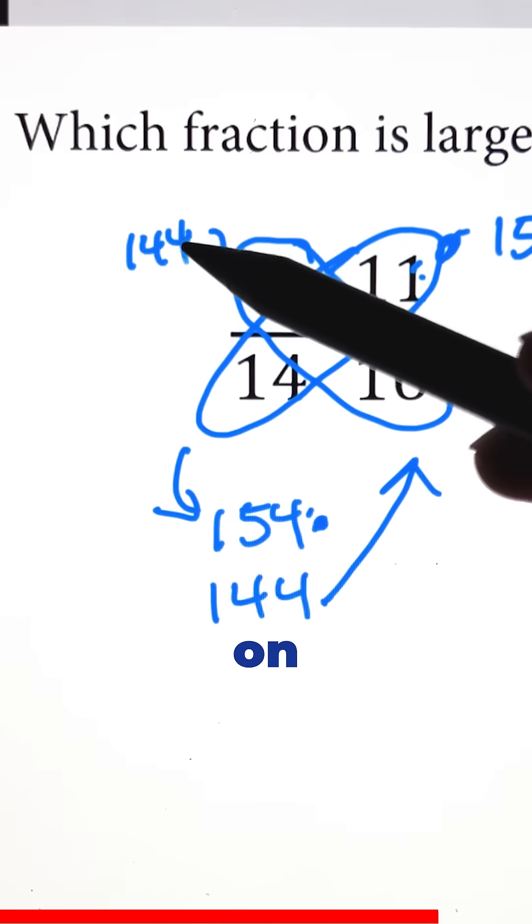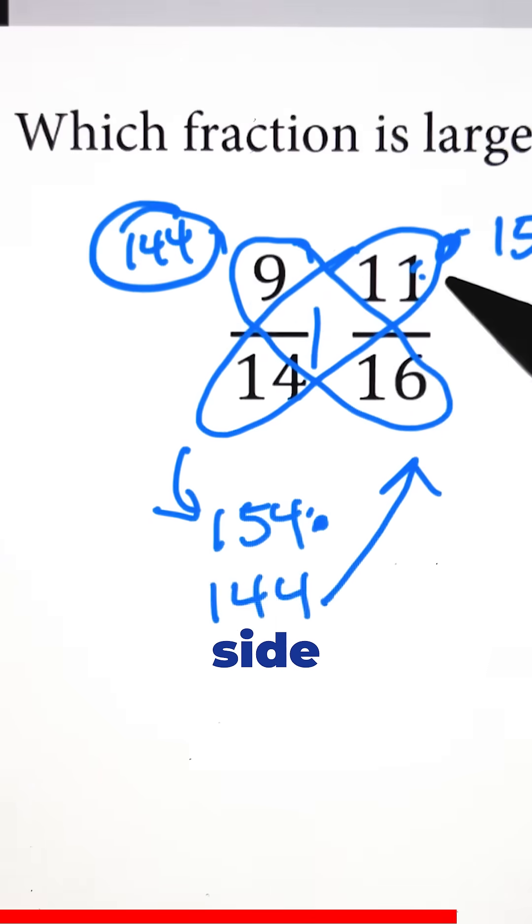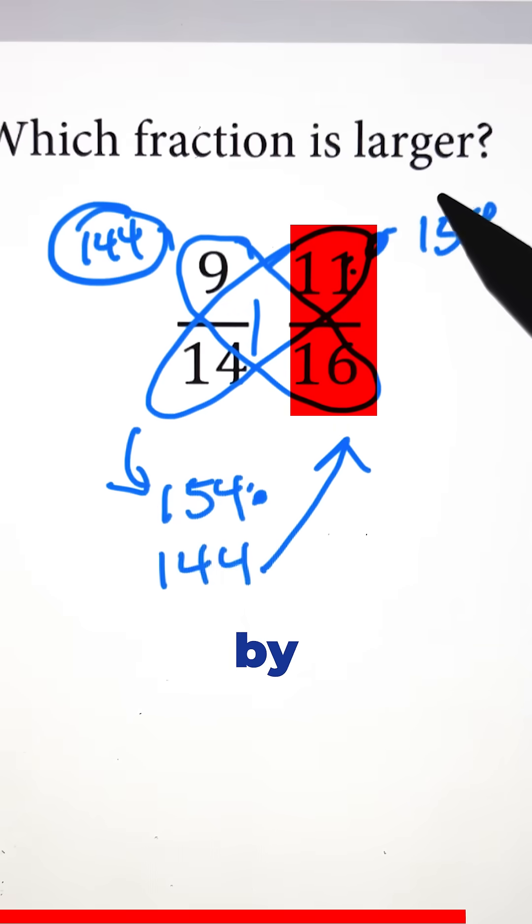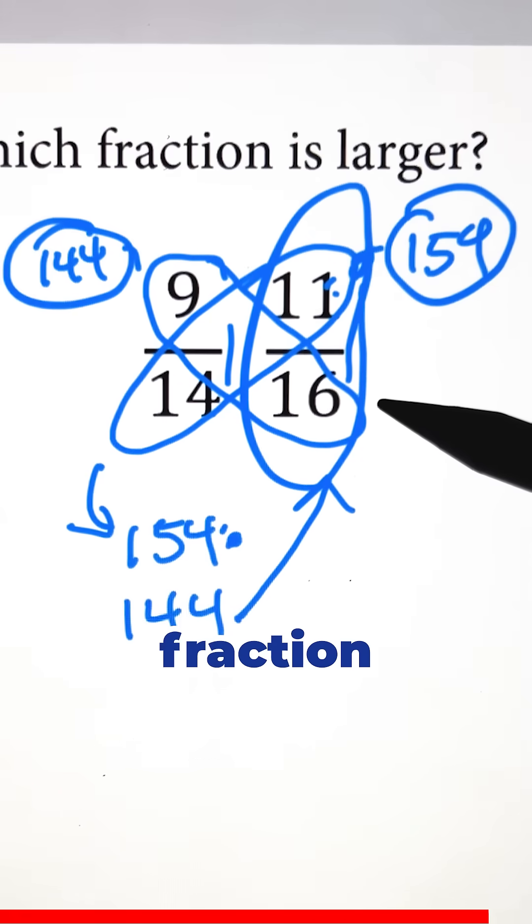So this side is represented by 144, the left side, and the right side is represented by 154. And because 154 is greater than 144, then 11/16 is going to be the bigger fraction.